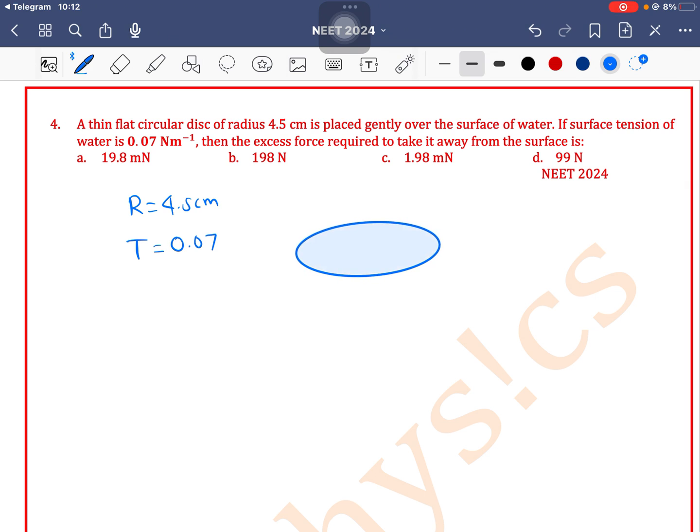place a disk on a water surface, the force of surface tension acts on the circumference of this disk. The force of surface tension can be written as tension times effective length.